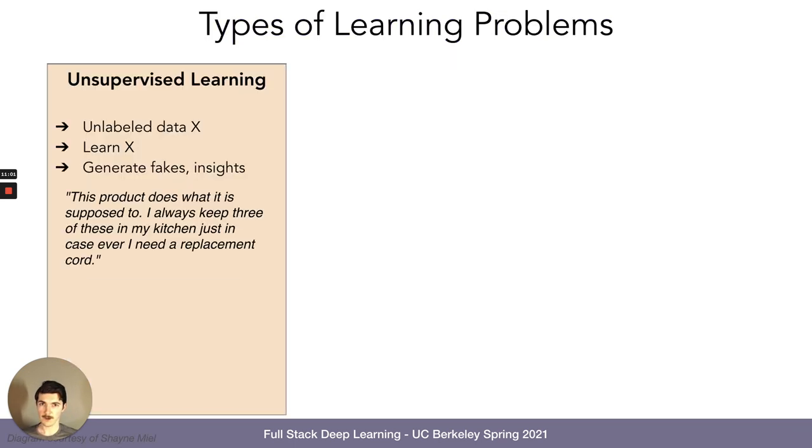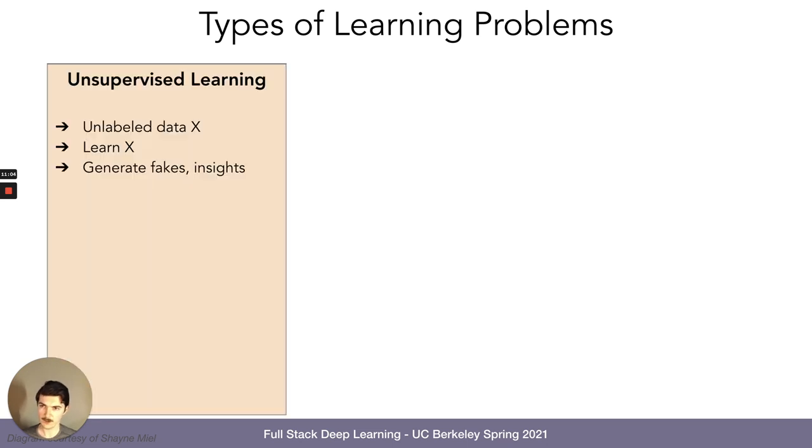So supervised learning, actually, unsupervised learning, you get unlabeled data x, that means x can be maybe sound clips or text, like text strings. But there's nothing else associated with them. It's just the sound clips and the text strings or images. And the goal is really to learn the structure of that data. So you learn x. The reason you want to do it is because you can generate more of these types of data, you can generate fake sound clips, images or reviews. But you can also obtain insights into what the data might hold.